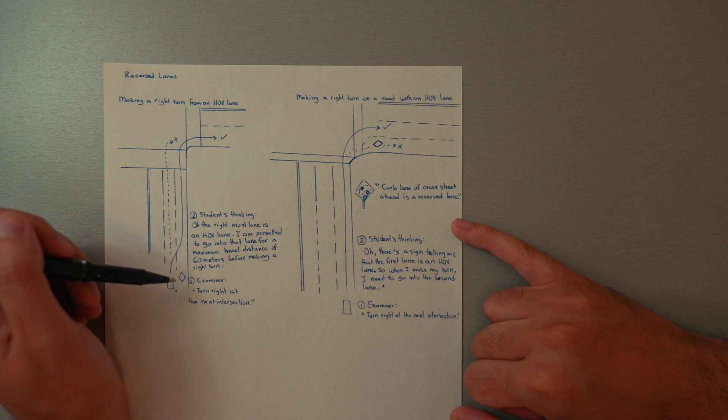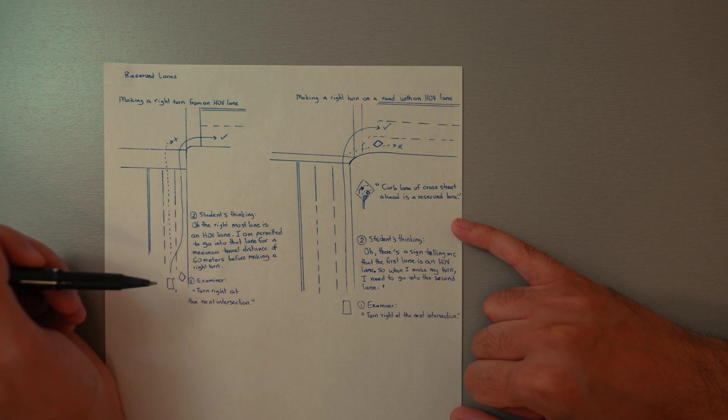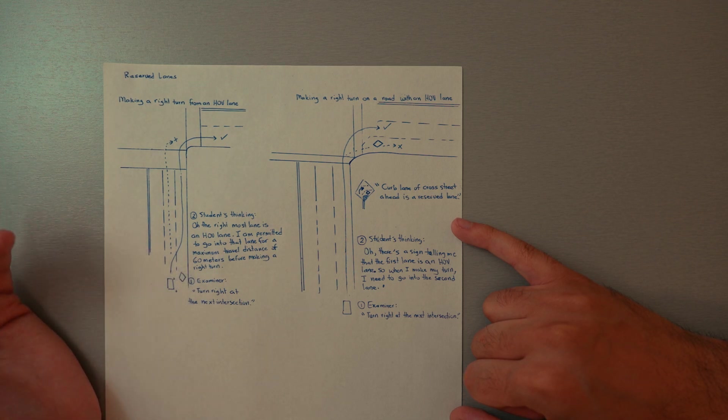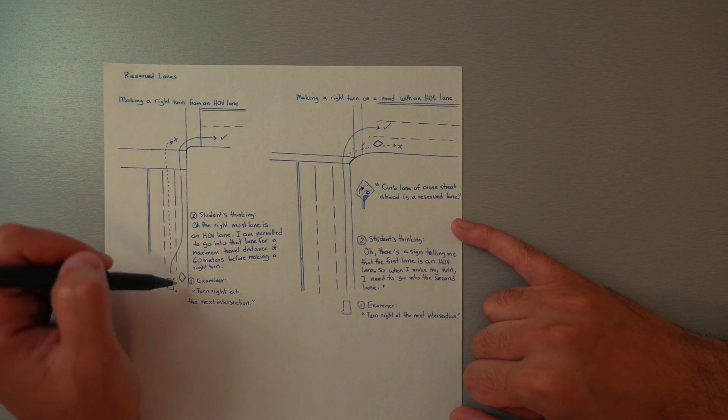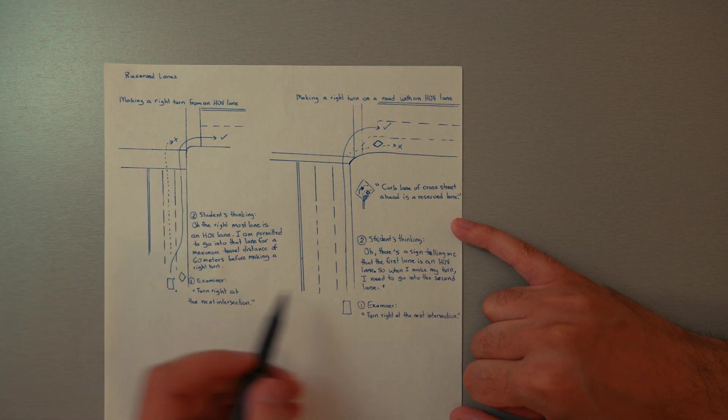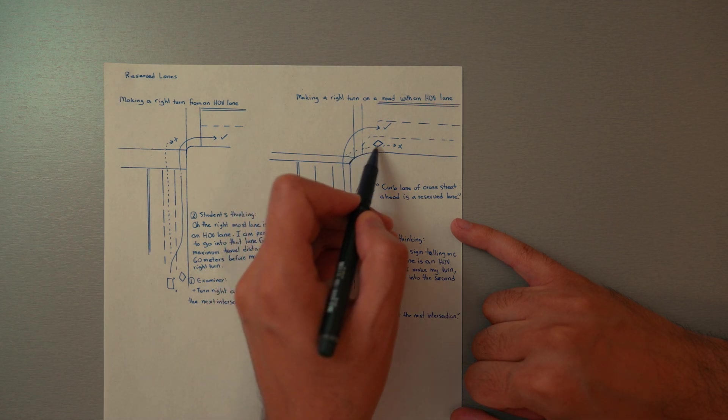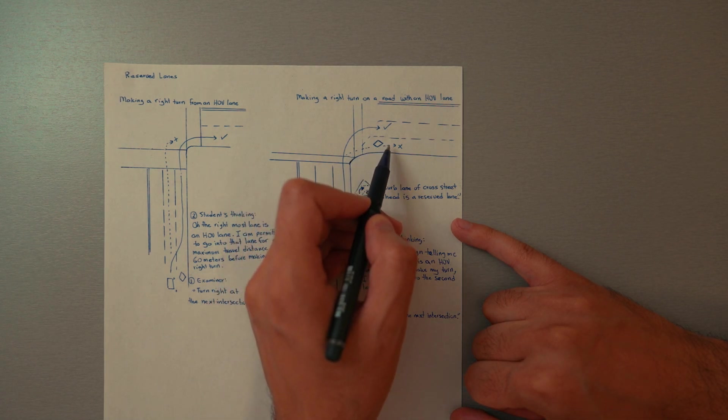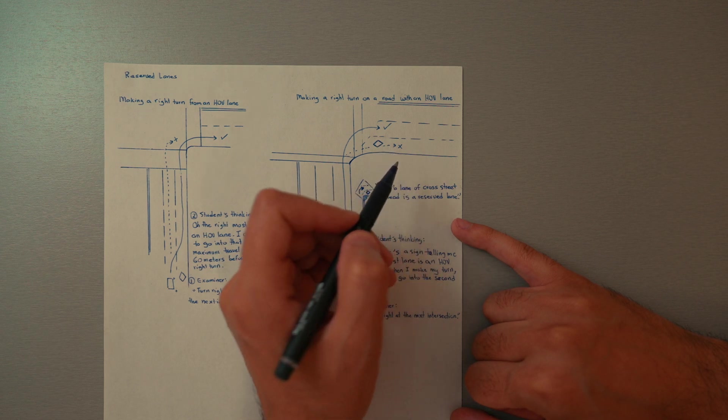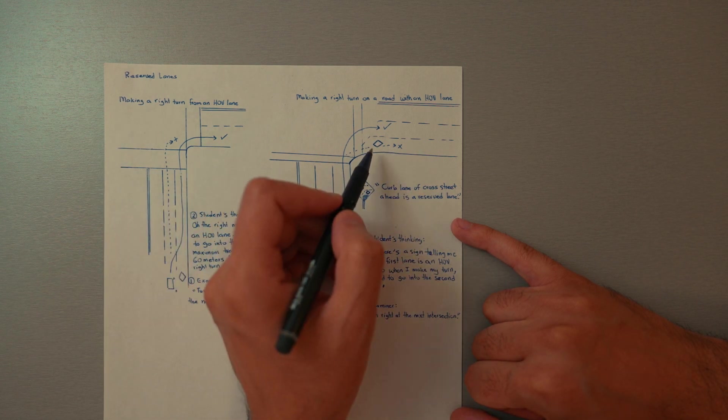Sometimes it says HOV lane but cars with two passengers or more can be traveling this HOV lane. In that case, if you have two passengers in your vehicle and you're coming up and you're making a right turn into an HOV lane that has that differentiation, then yes you can go into that lane as well.